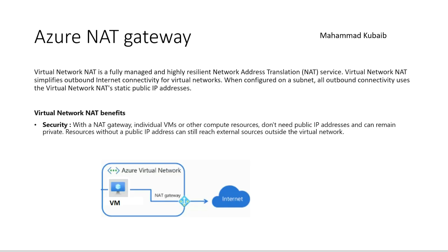Azure NAT Gateway is a fully managed, high-resilient network address translation service. Virtual network NAT simplifies outbound internet connectivity for virtual networks. When configured on a subnet, all outbound connectivity uses the virtual NAT static public IP address. Azure NAT Gateway will help you to send outbound traffic from your subnet or VNet to the internet without configuring any public IP address on the virtual machine.